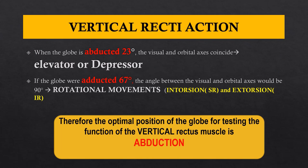To understand the other types of versions, you need to understand the actions of the vertical recti muscles: the superior rectus and inferior rectus. These are not parallel to the visual axis — they form an angle of about 23 degrees. When the globe is abducted by 23 degrees, the visual axis and the muscle axis will coincide. During that time they have their primary action: elevation caused by the superior rectus, and depression caused by the inferior rectus.